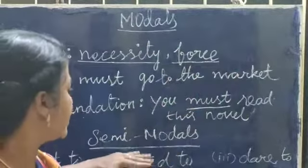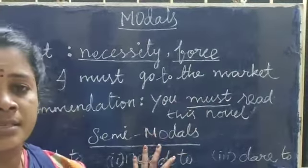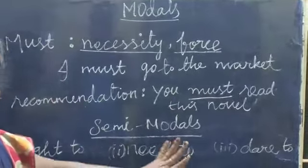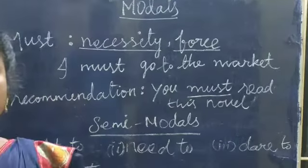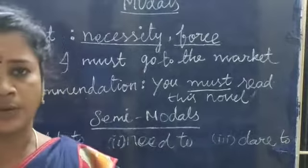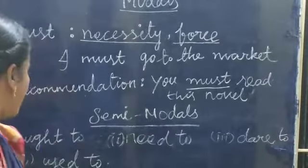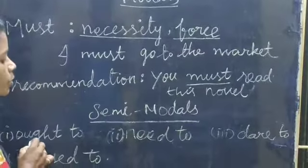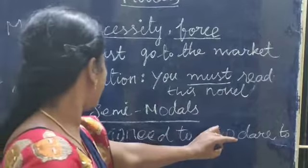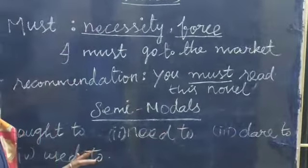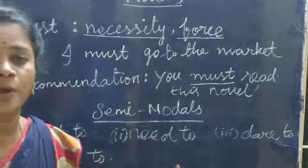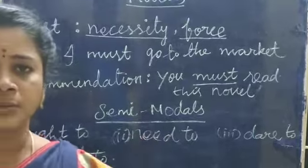Next, we are going to see semi-modals. We are using four semi-modals. Now we are going to see which situation each should be used in. Okay? Have-to, need-to, be-to, used-to. Again, we are going to see all the models.